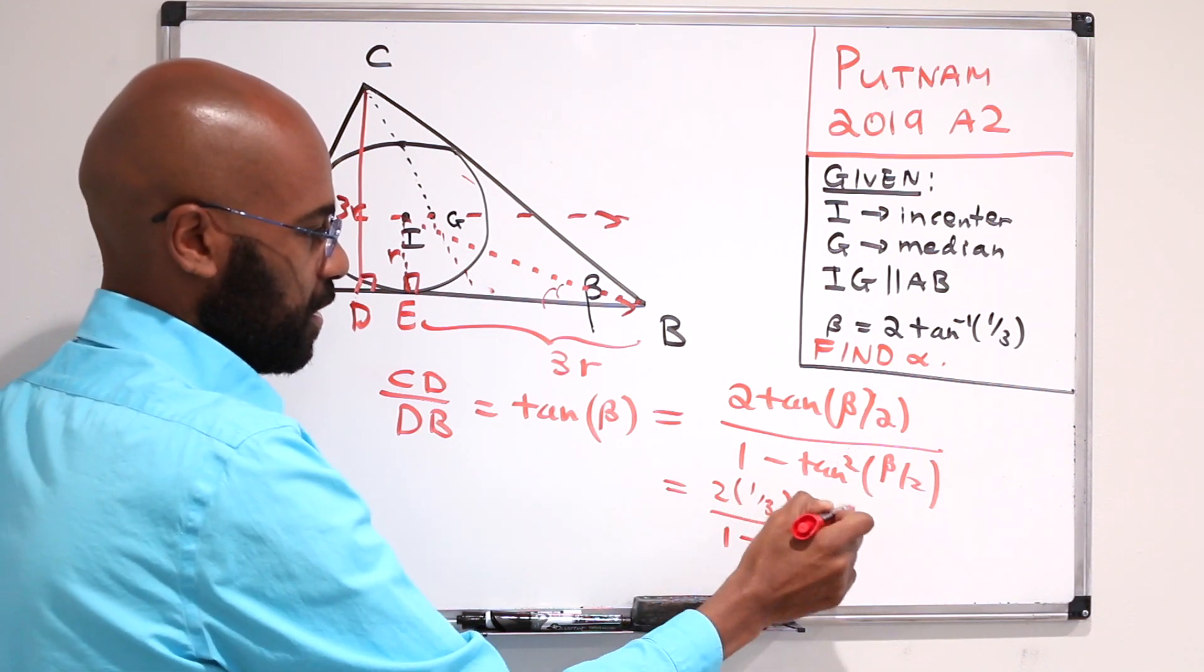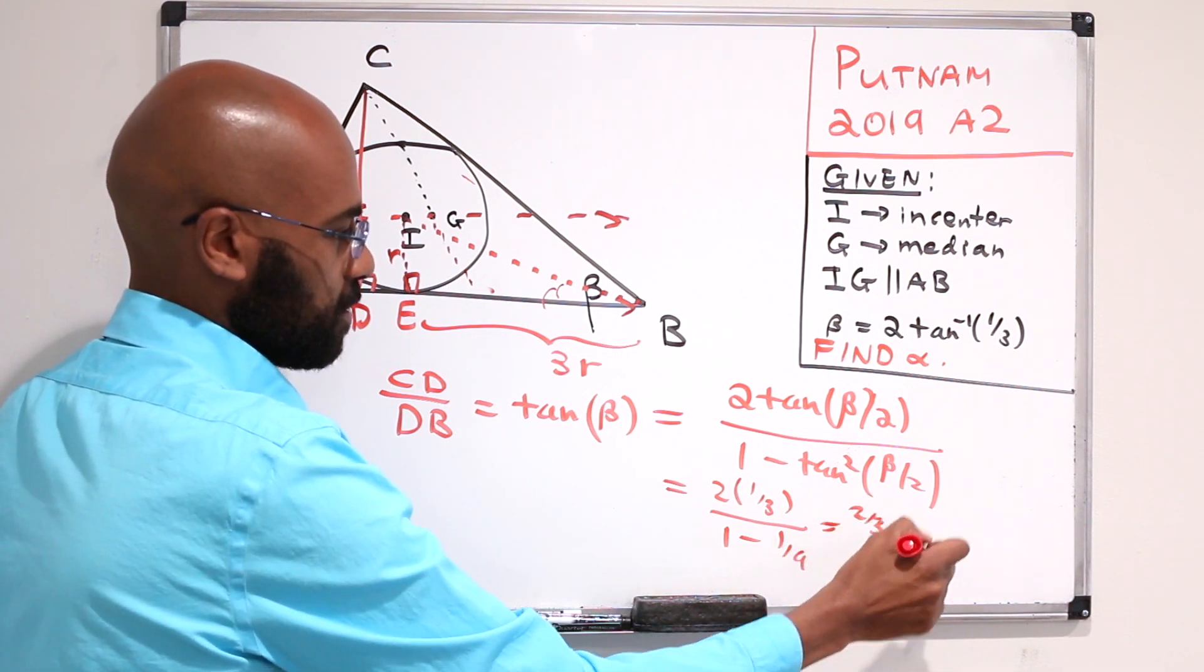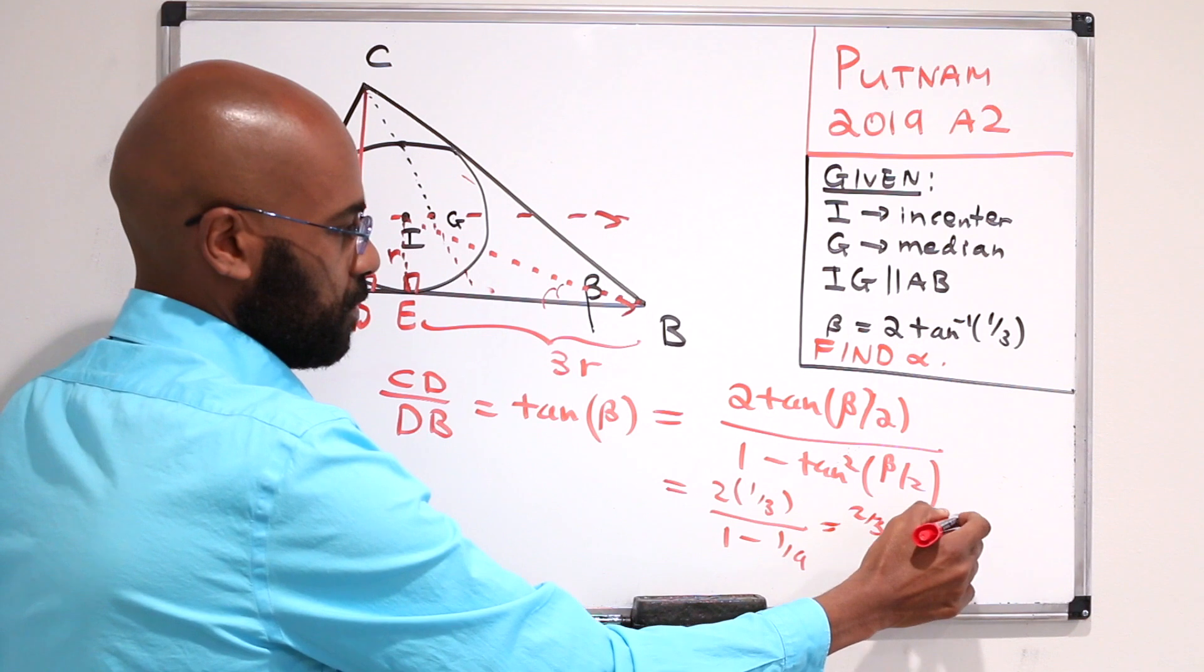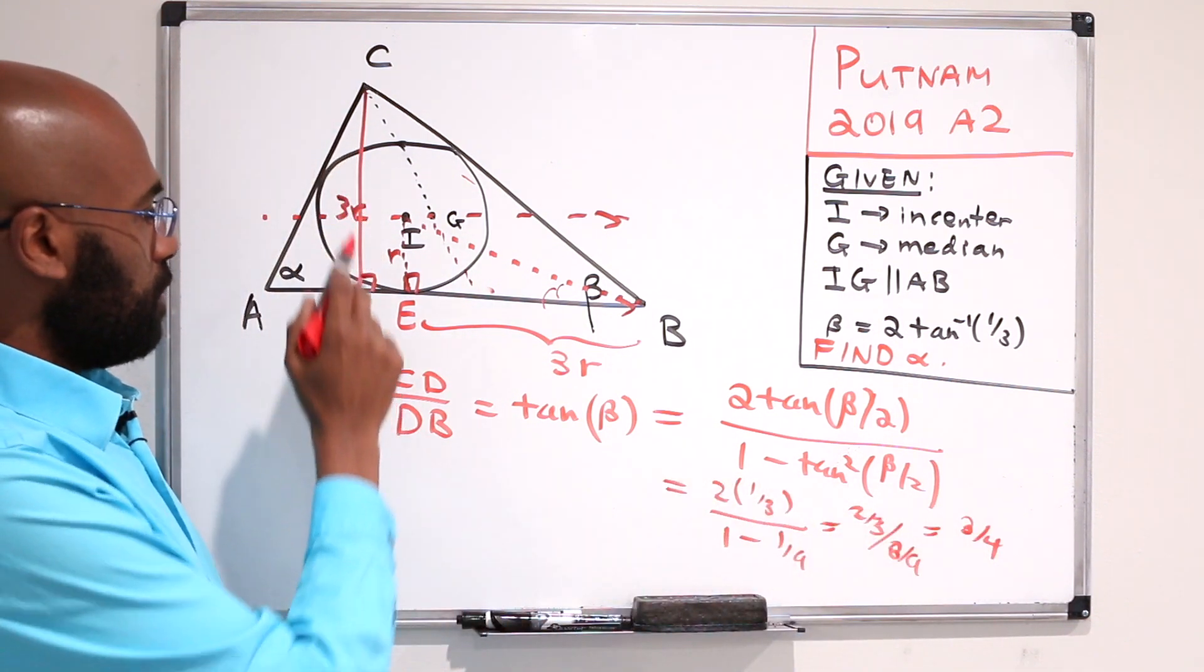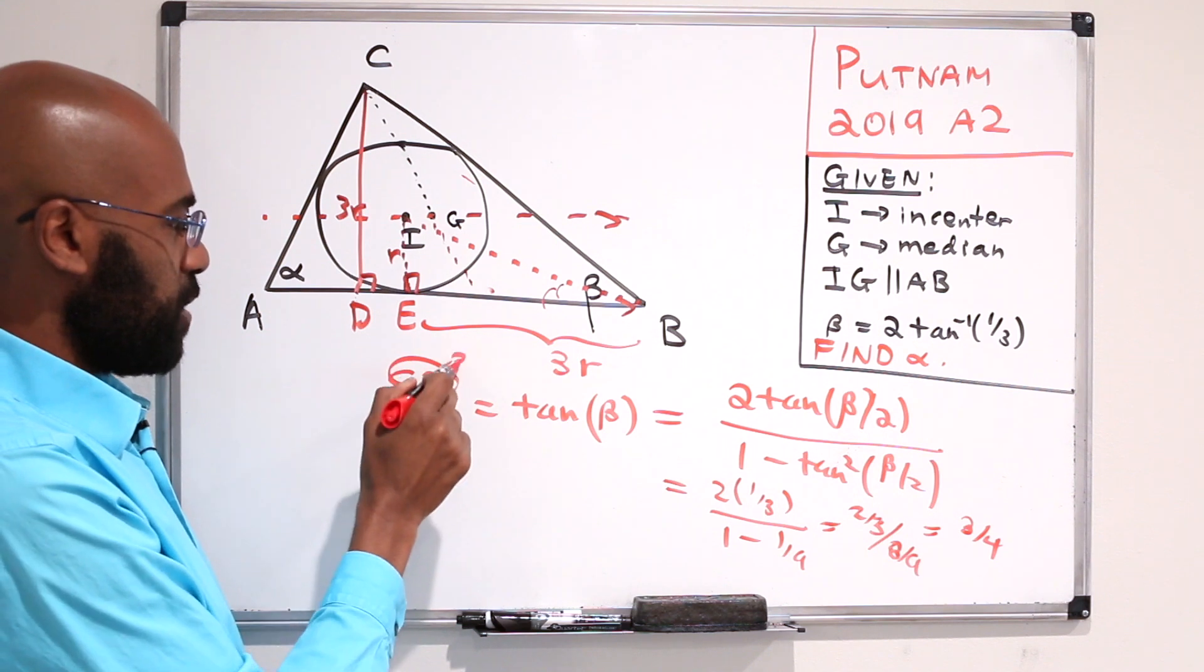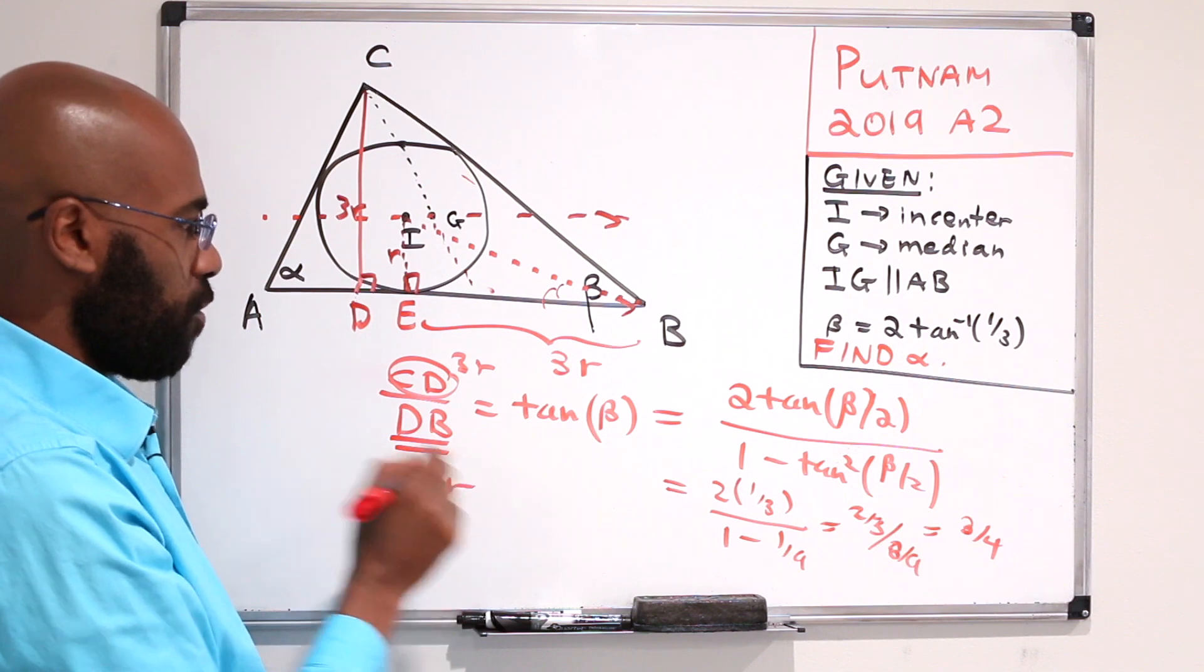Giving us 2 thirds over 8 ninths, which is 3 fourths. Now CD itself was 3R, so 3R over DB is 3 fourths. DB has to be 4R.